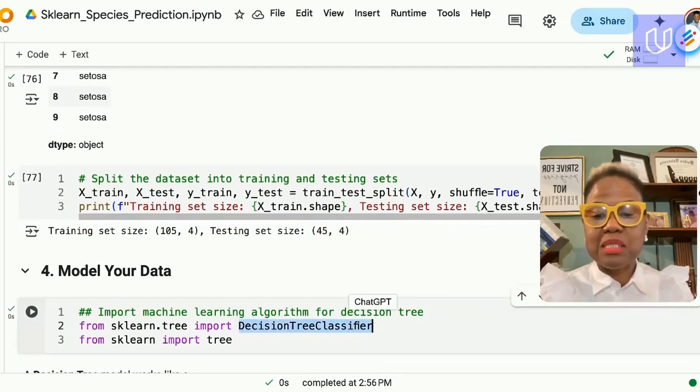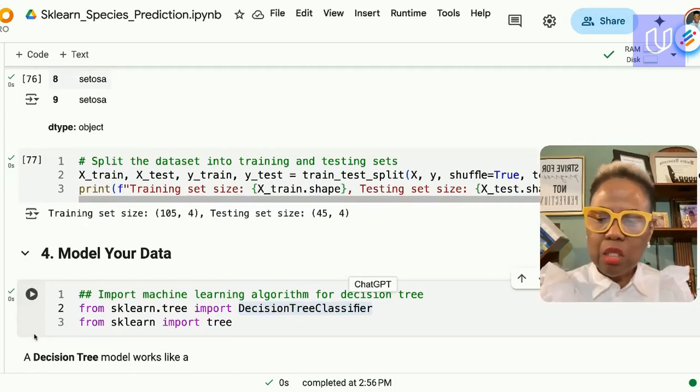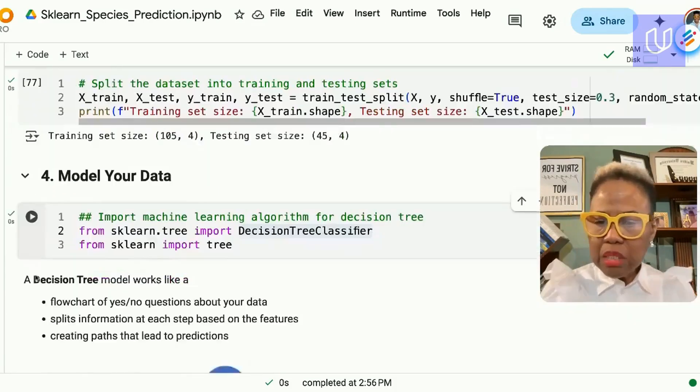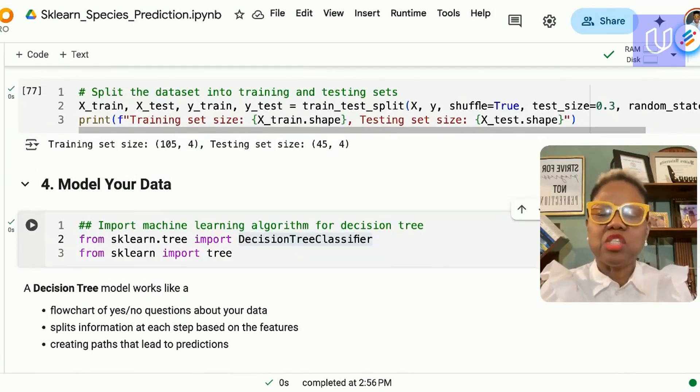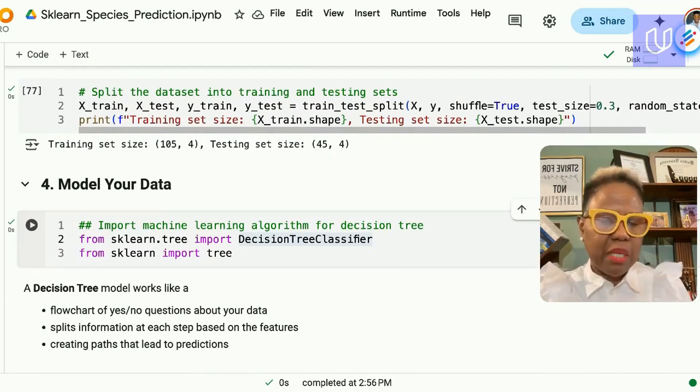Now we're ready for modeling using the decision tree classifier from sklearn. So we load that into our notebook. A decision tree is one of the simpler models. It's a flowchart-like which is easy to understand. It works by splitting the information in our dataset based on the features.